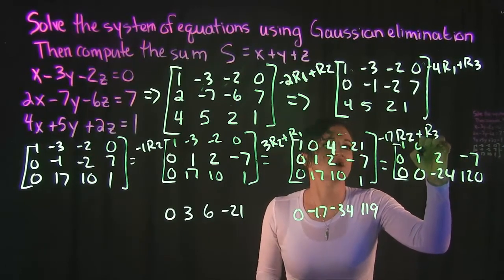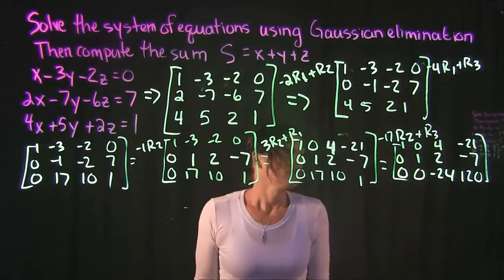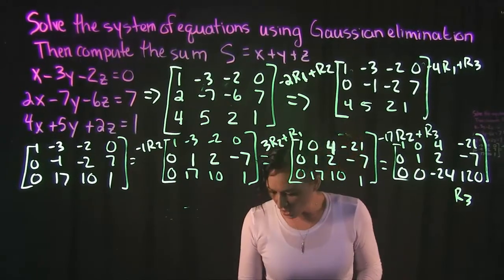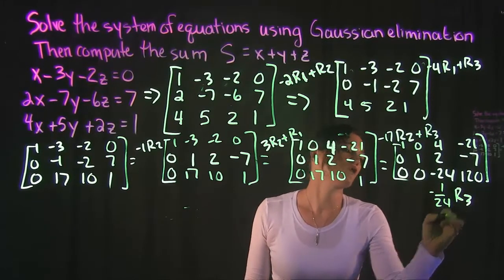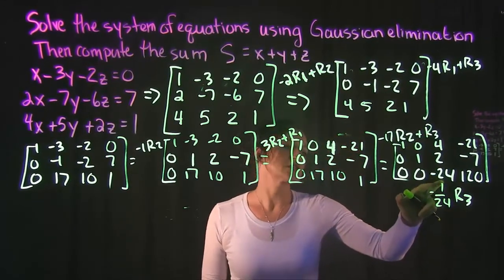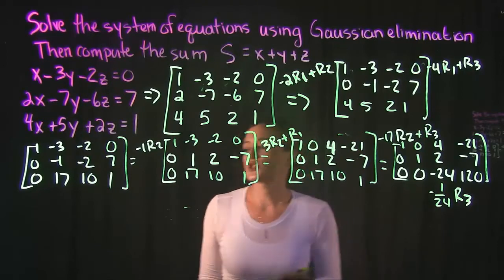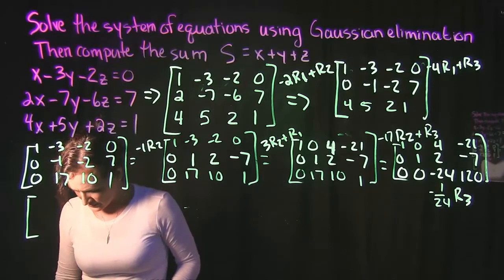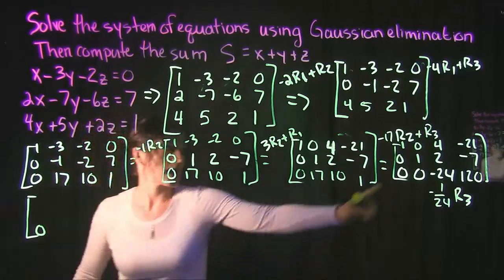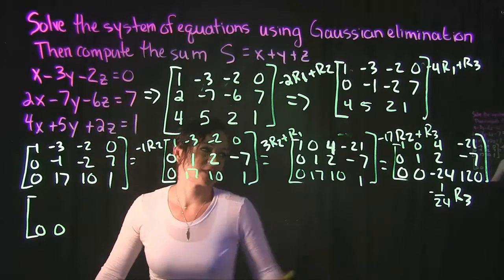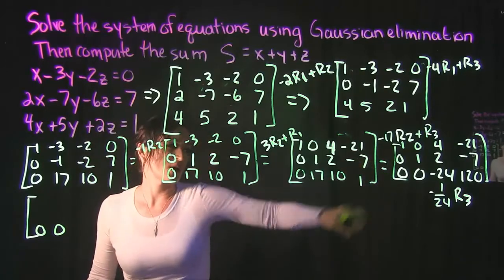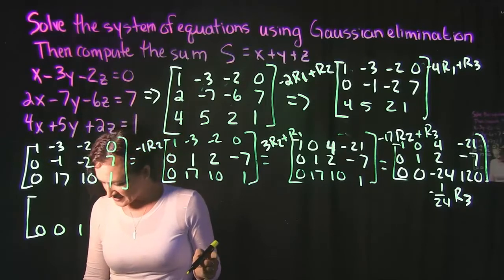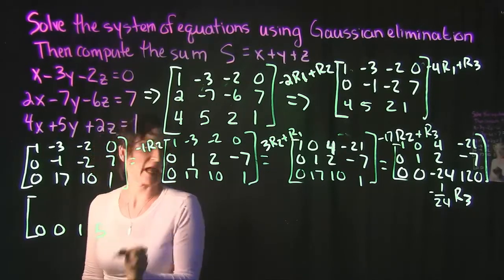Everything else stays the same. For our next step we're going to take row 3 and multiply it by negative 1 over 24 — we're trying to turn the -24 into a 1. When we do that: 0 times anything is 0, 0 times anything is 0, -24 times -1/24 is 1, and 120 times -1/24 is negative 5.